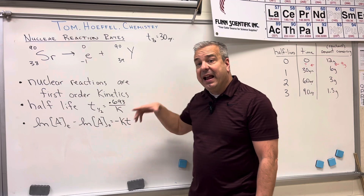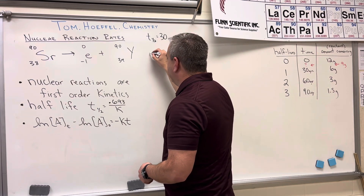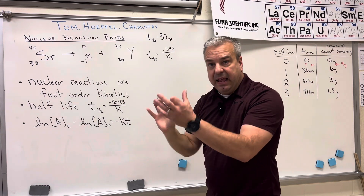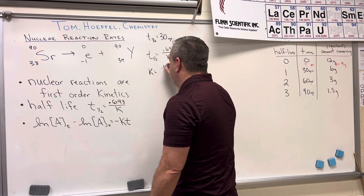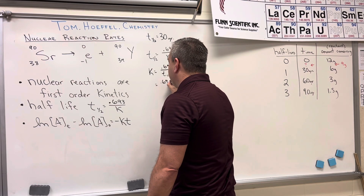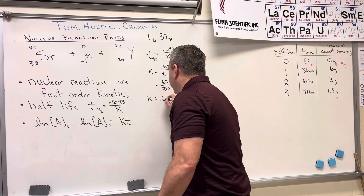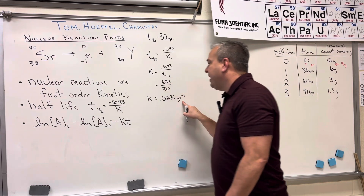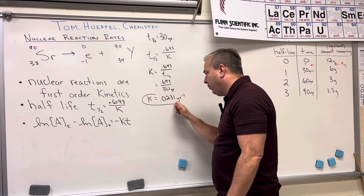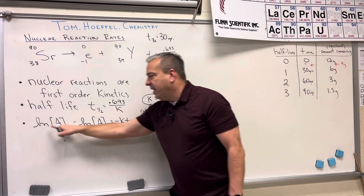The first thing we do is figure out what k — the rate constant — equals. We use the relationship: t½ = 0.693 / k. Rearranging gives k = 0.693 / t½. The half-life is 30 years, so k = 0.693 / 30 years = 0.0231 yr⁻¹. Years is in the denominator, so the units are per year.